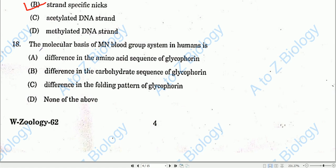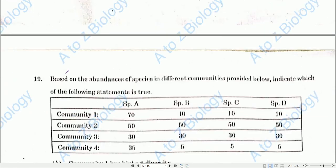Question number eighteen: The molecular basis of the MN blood group system in humans is the difference in carbohydrate sequence of glycophorin. Option B will be the correct one.